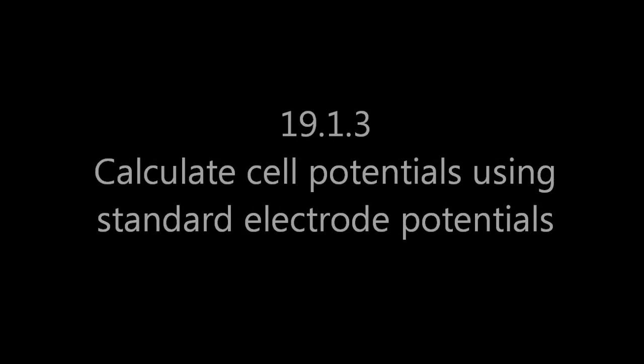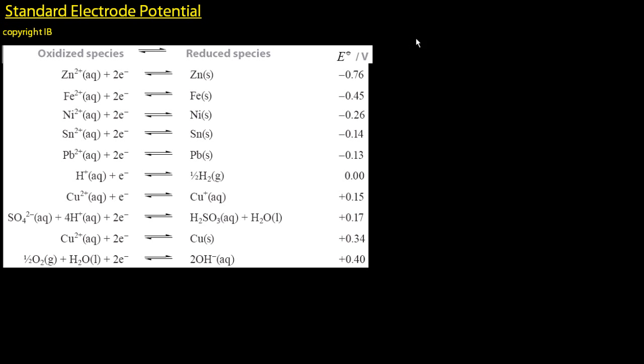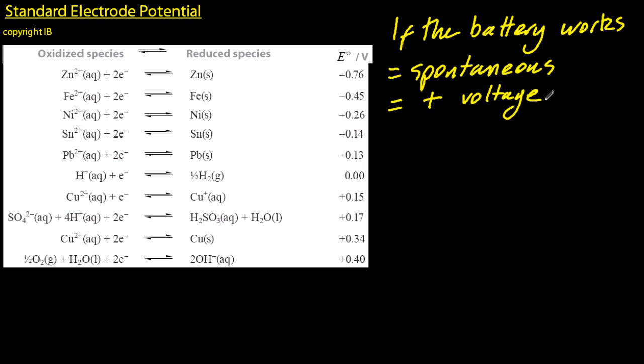I'm going to use voltage instead of standard cell potential because everyone else in the world does. If the battery works, then it's called a spontaneous battery, and that's a positive voltage.